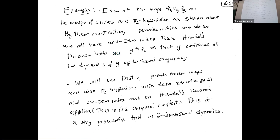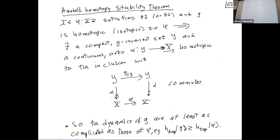All our examples phi-1, phi-2, phi-3 were all pi-1 hyperbolic because there was no cancellation in the action on pi-1. Periodic orbits were dense and all had non-zero index. Thus our theorem holds: any of these maps, if you isotope or homotope them as much as you want, your original dynamics don't go away. Pseudo-Anosov maps also satisfy this theorem, and in fact they are the real inspiration for it.